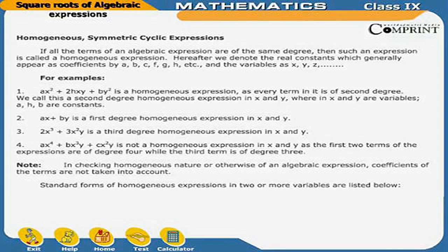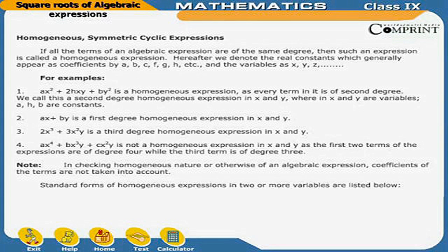We call ax² + 2hxy + by² a second degree homogeneous expression in x and y, where x and y are variables and a, h, b are constants. ax + by is a first degree homogeneous expression in x and y. 2x³ + 3x²y is a third degree homogeneous expression in x and y. ax⁴ + bx³y + cx²y is not a homogeneous expression in x and y, as the first two terms are of degree 4 while the third term is of degree 3. Note: in checking homogeneous nature, coefficients of terms are not taken into account.